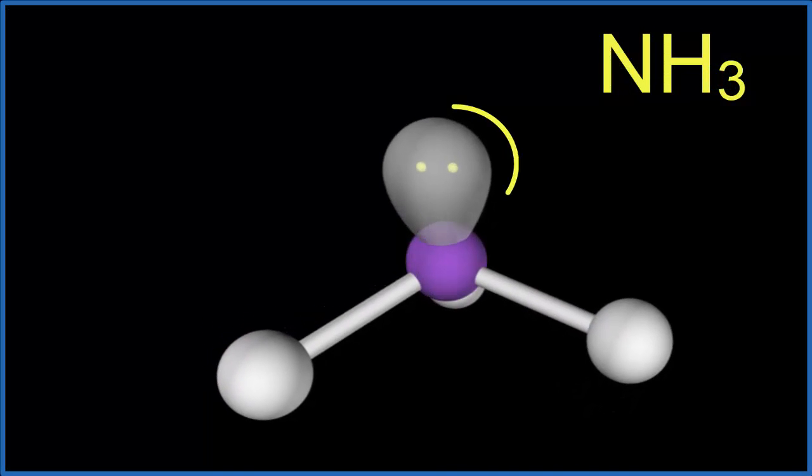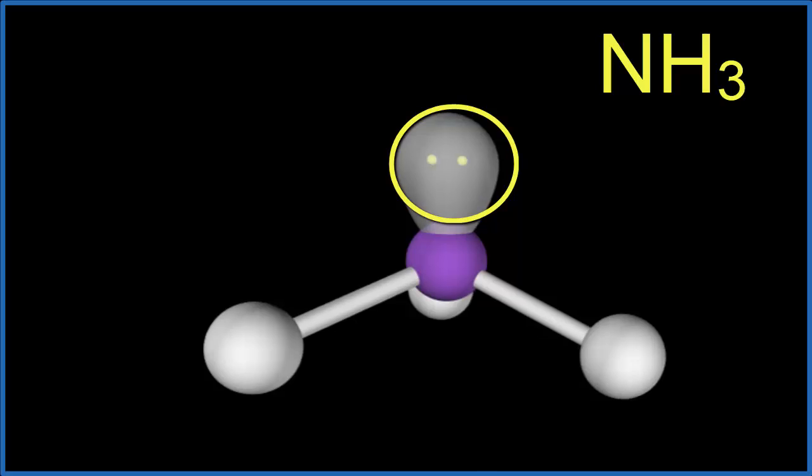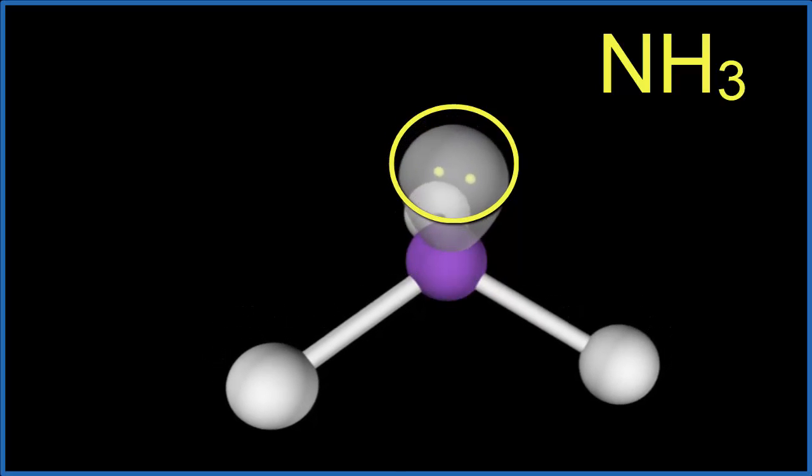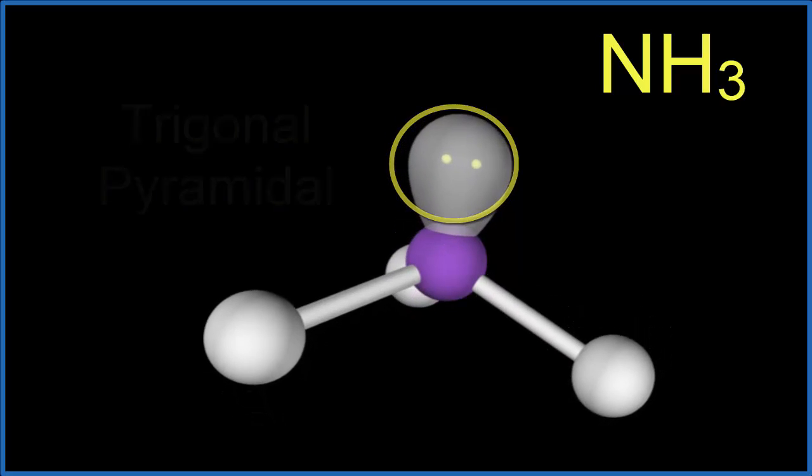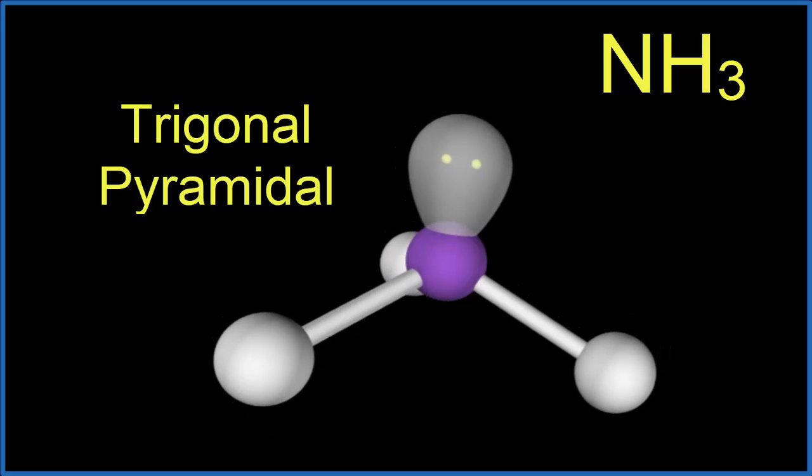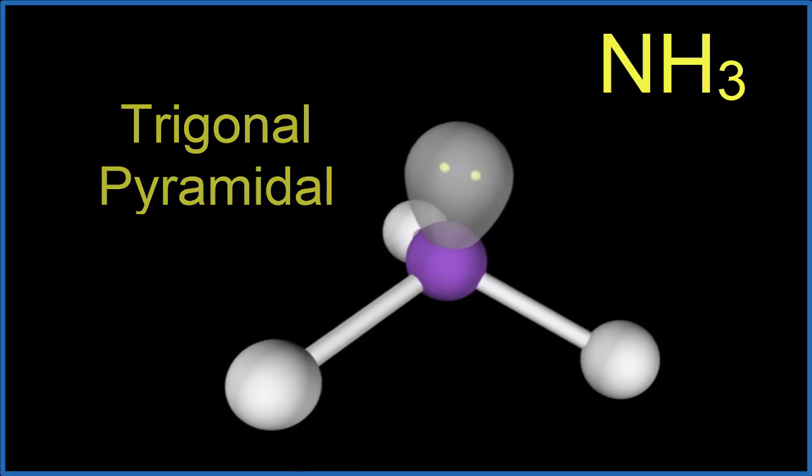For ammonia, we have that lone pair there and that's pushing down each one of those hydrogen atoms. So we end up with what's called a trigonal pyramidal molecular geometry, kind of like a pyramid with those lone pair of electrons on the top.